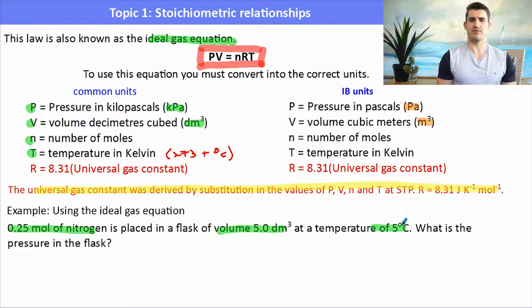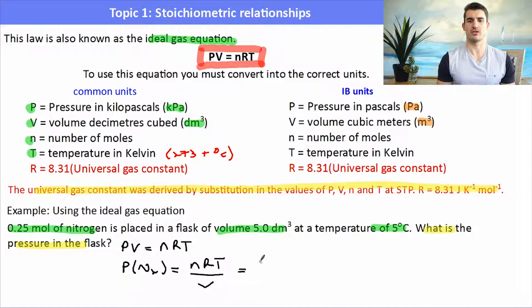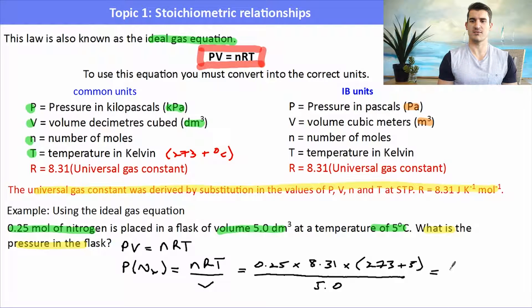Example: 0.25 moles of nitrogen placed into a flask of 5 decimetres cubed at a temperature of 5 degrees Celsius. What is the pressure in the flask? We use PV = nRT and rearrange to find pressure: P = nRT/V. Substituting n = 0.25, R = 8.31, T = 273 + 5 = 278 K, V = 5, we get a pressure of 116 kPa.